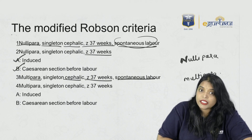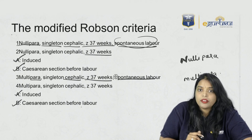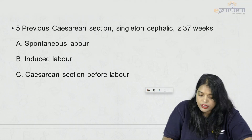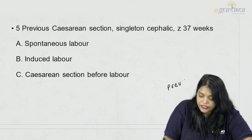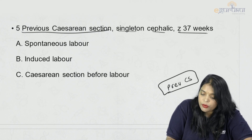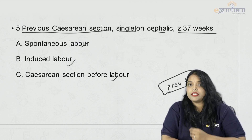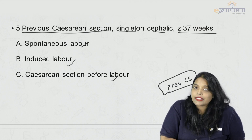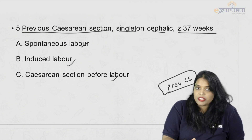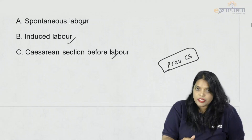Group 4 is multipara, singleton, cephalic, more than 37 weeks — 4A means induced, 4B means cesarean section before labor. So groups 1 and 2 are nulliparas, groups 3 and 4 are multiparas. Group 5 is previous cesarean section, singleton, cephalic, more than 37 weeks — 5A is spontaneous labor, 5B is induced labor, 5C is cesarean section before labor.